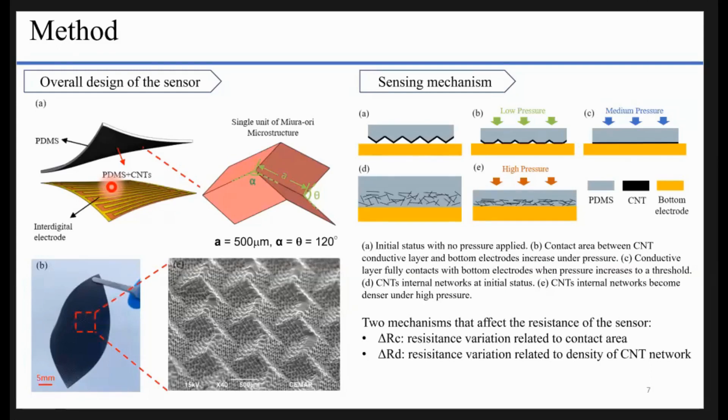We use carbon nanotubes as the conducting materials. Rather than mix the carbon nanotubes into the PDMS uniformly, we choose to make the CNT densely on the surface of the Miura-ori structure. It's kind of like the doping process in micro fabrication. If you're familiar with MEMS, that may help you understand what we're doing here.